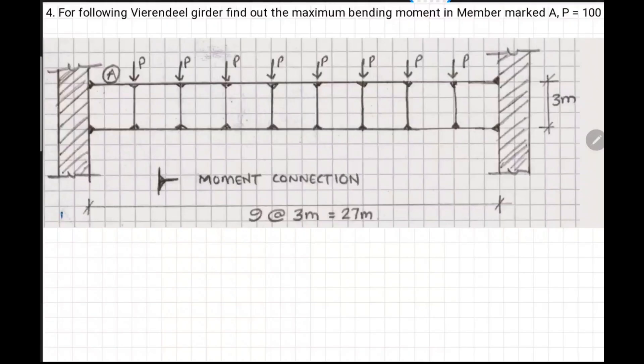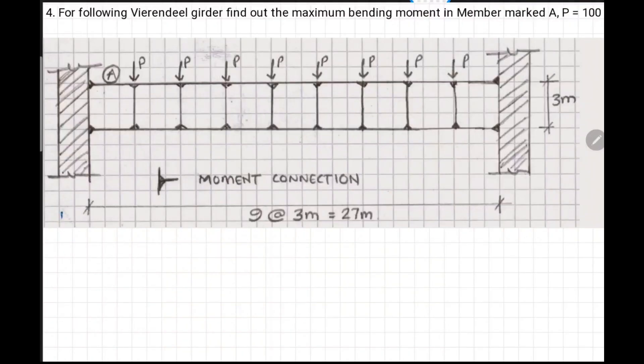Let's jump to question number 4. Following Vierendeel girder, find maximum moment in member marked A if the load P is 100 kilonewtons. If we see this problem, it is a Vierendeel girder - all connections are moment connections. And we have to find a bending moment in member A.